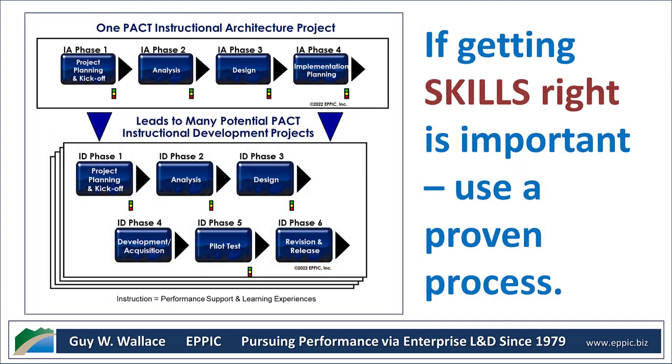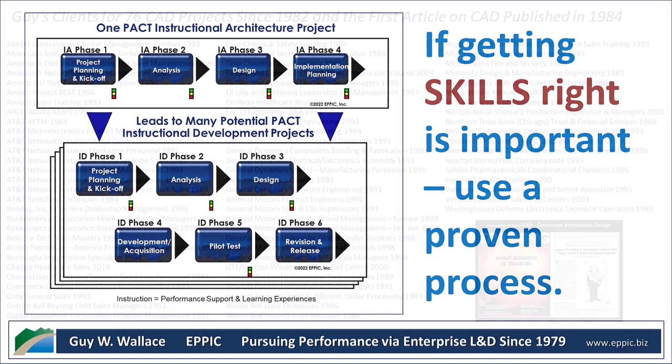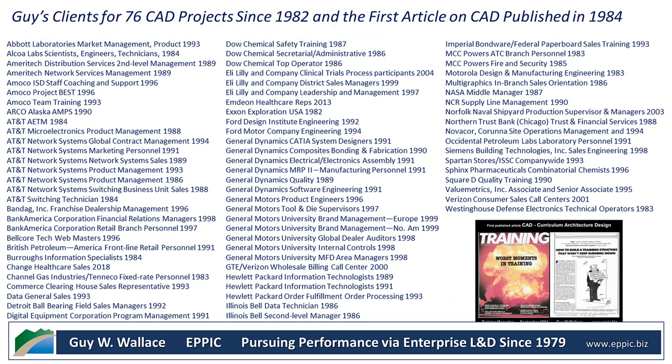If getting skills right is important, you really should think about using a proven process. My 76 curriculum architecture design projects since becoming a consultant in 1982 include Fortune 500-level companies across every function in a modern enterprise. I've also worked with government institutions such as NASA and their middle management target audiences, plus the Norfolk Naval Shipyard production supervisors and managers. I've included outputs from the Norfolk Naval Shipyard project on my website because it was taxpayer-funded.